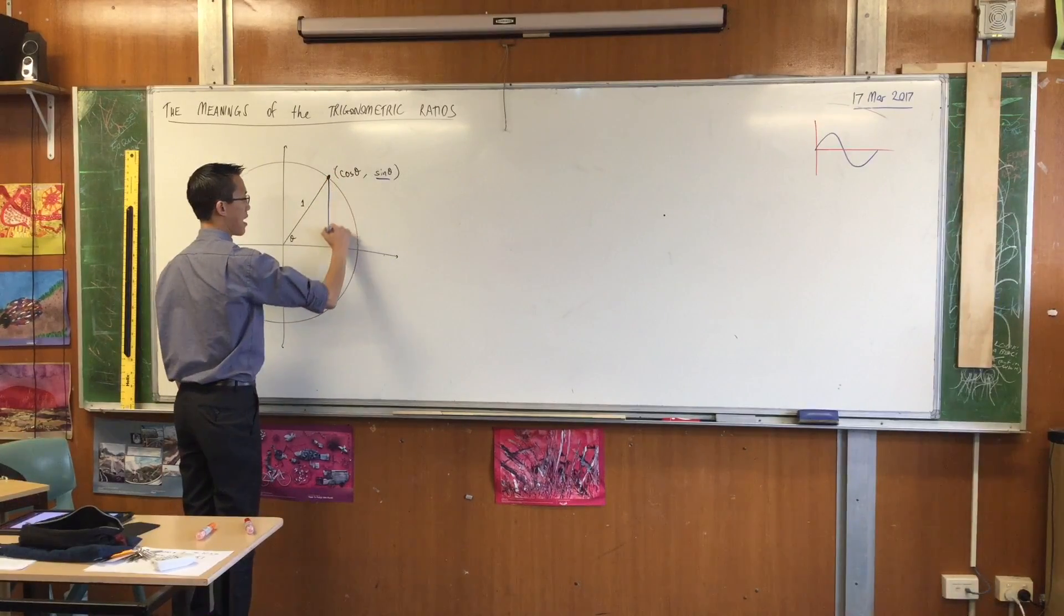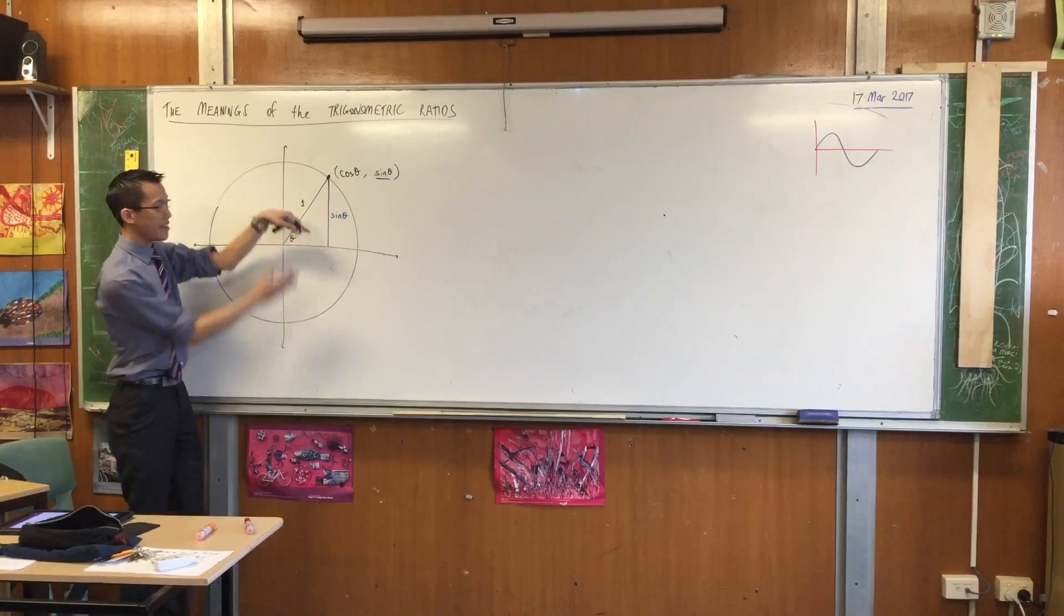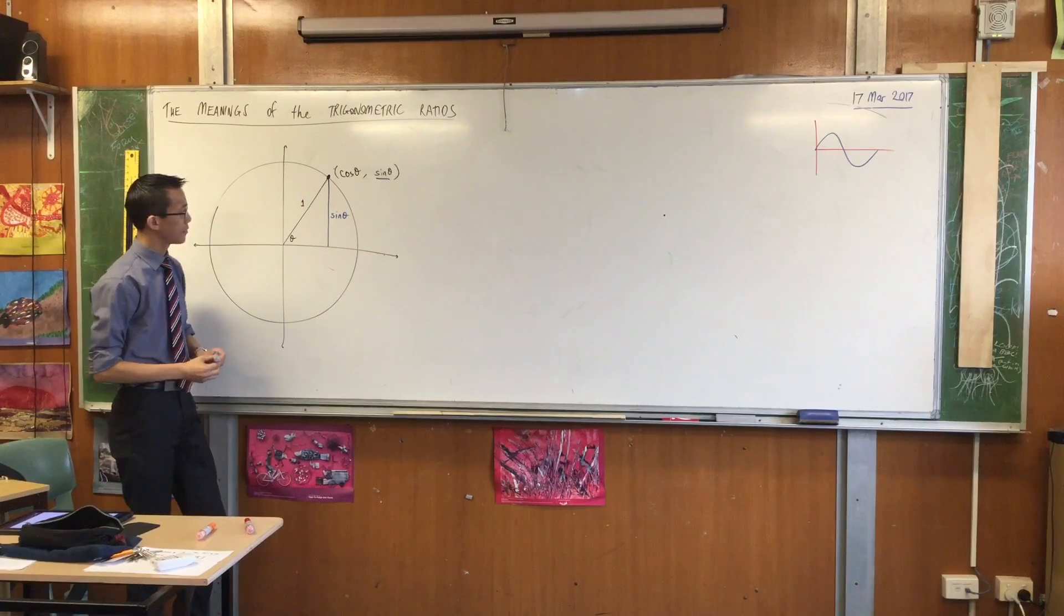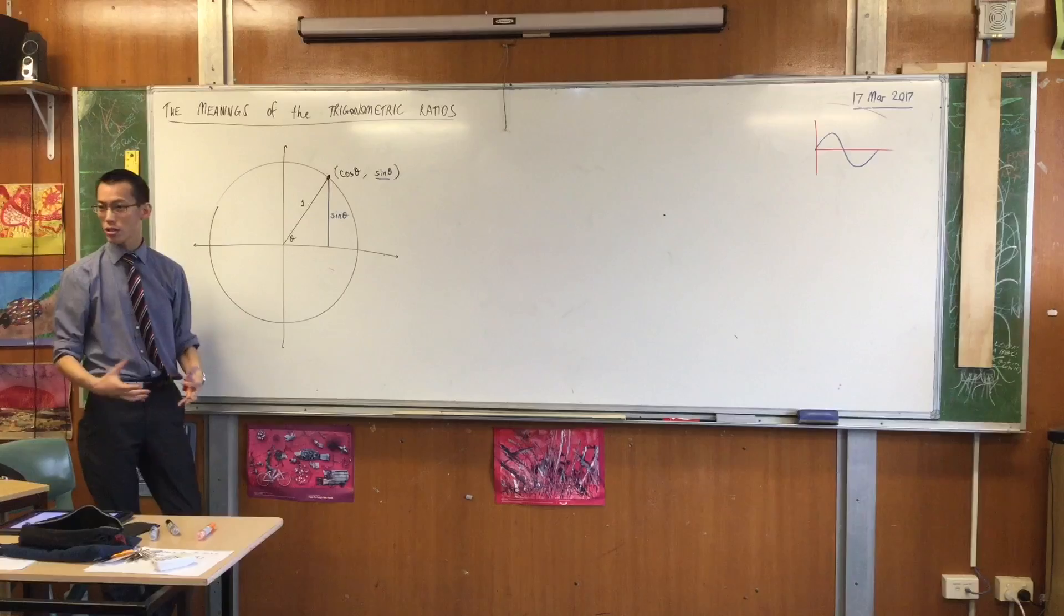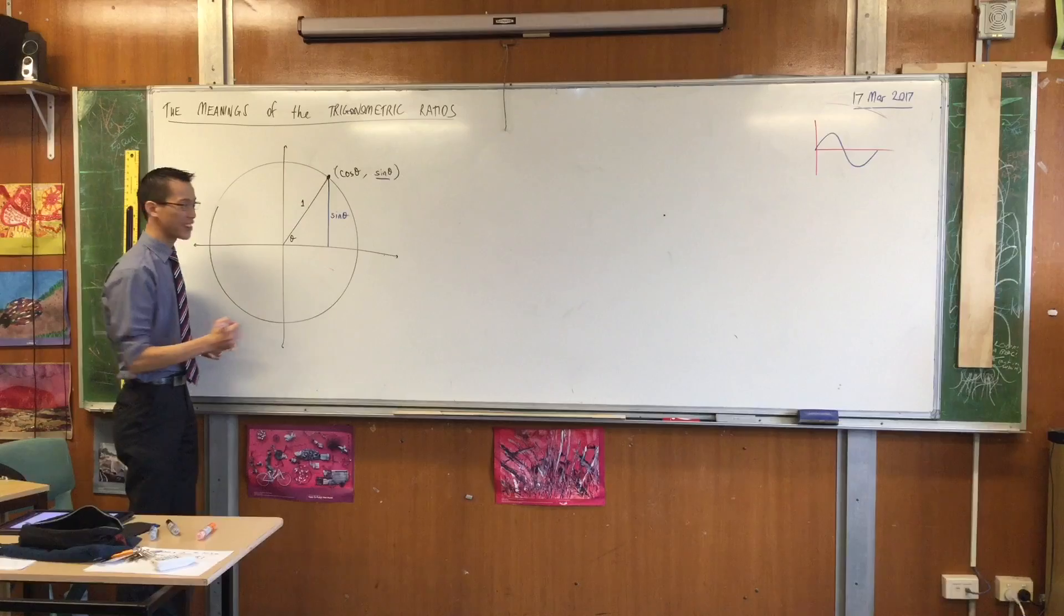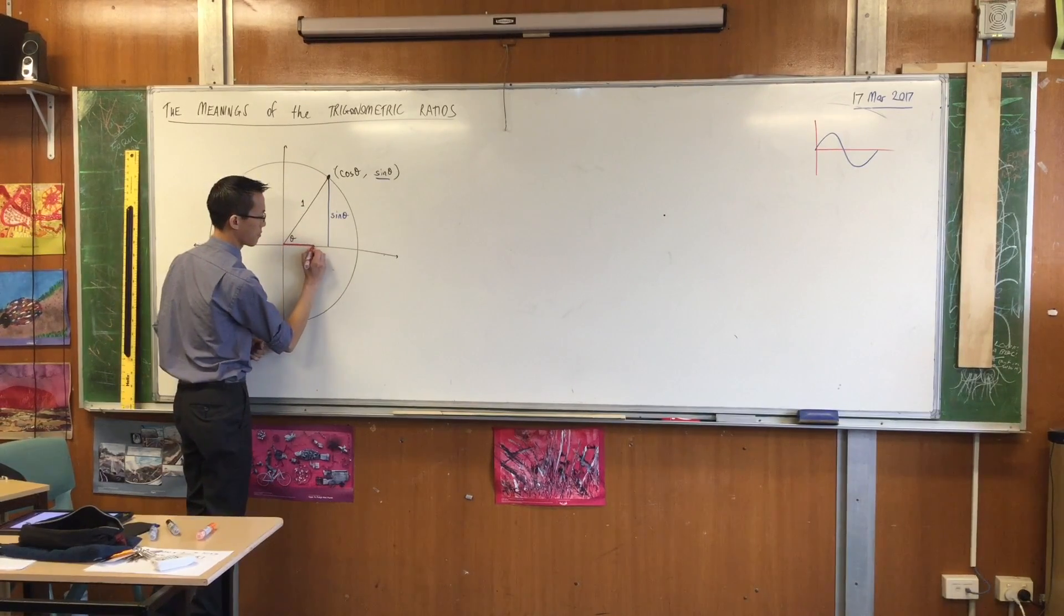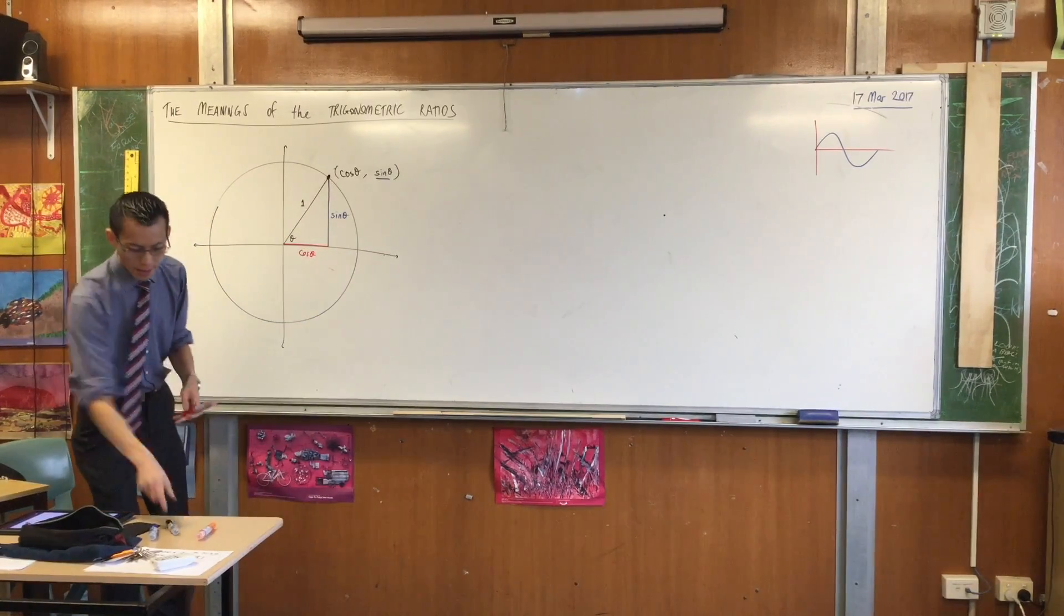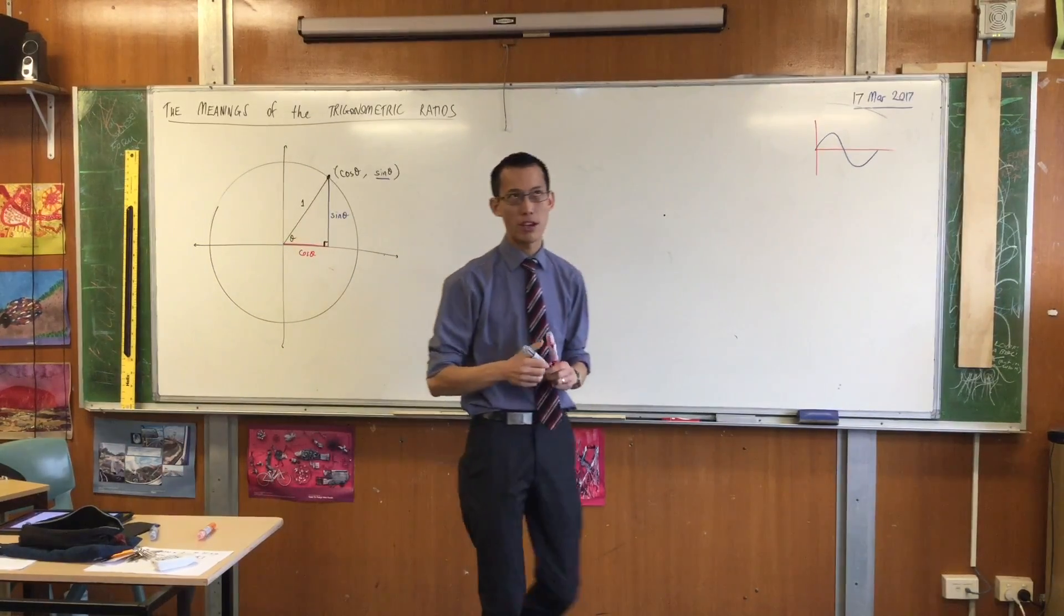I'm going to do sine in blue. If the y-coordinate is sine, then this length here is sine theta, zero point whatever it happens to be. In exactly the same way, I can construct where cosine of theta is. It's the x-coordinate, so I draw it on the x-axis from the origin to this point over here. This red length here is cos theta. We have successfully formed that right-angle triangle upon which all the trig ratios began.